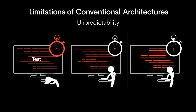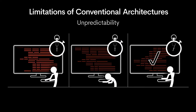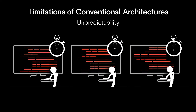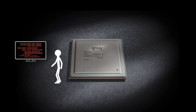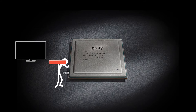Multi-core only compounds this problem. Unpredictability forces developers to test and validate the system iteratively and plan around the worst-case performance and latency. Groq's Tensor Streaming Processor gets unprecedented computing power and efficiency from simplicity.